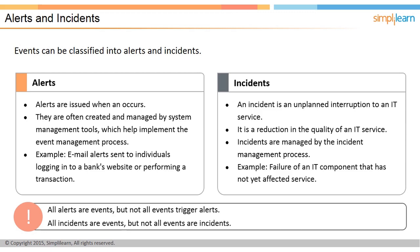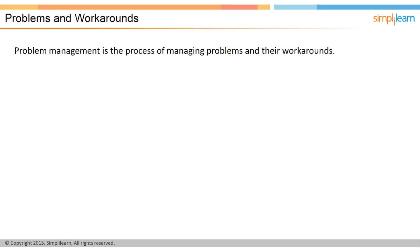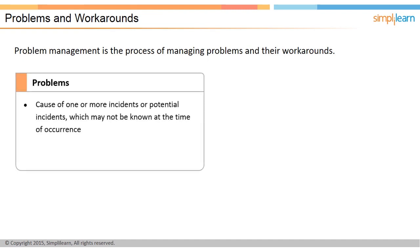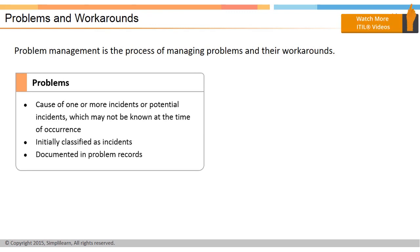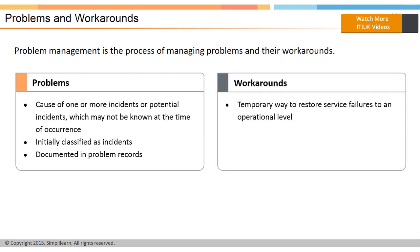In the next screen, let us discuss problems and workarounds. In the ITIL context, the process of managing problems and coming up with workarounds is called problem management. A problem is the cause of one or more incidents or potential incidents; the cause may not be known at the time of the incident's occurrence. Problems are initially classified as incidents and are documented in problem records. A workaround is a temporary way to restore service failures to an operational level — for example, rebooting a server.